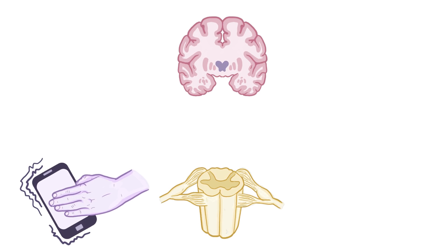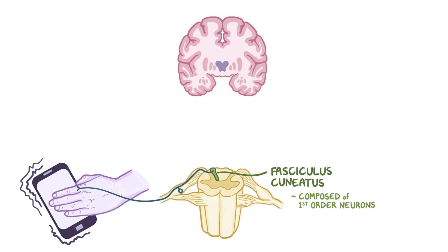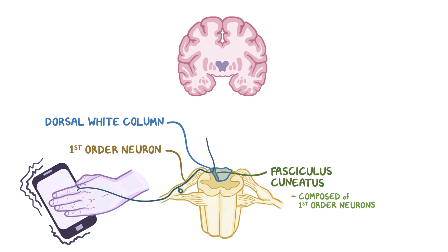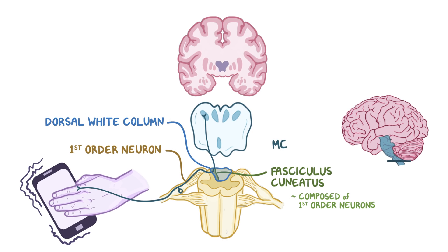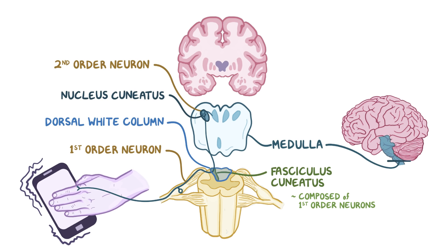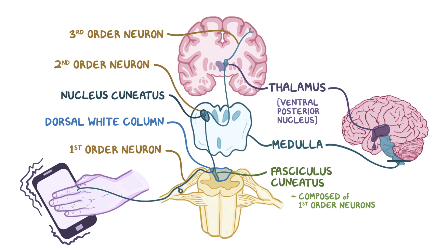Similarly, if you suddenly grab a vibrating cell phone, the sensation of vibration is carried from the nerves in the skin of your palm via the fasciculus cuneatus, which is a collection of nerves composed of first-order neurons. The fasciculus cuneatus is contained within the dorsal white column, located posteriorly in the white matter of the spinal cord. The first-order neuron ascends up along the same side of the whole length of the spinal cord to reach the lower level of the medulla oblongata, where it synapses with the cell body of a second-order neuron in the nucleus cuneatus. The second-order neuron then sends off an axon that crosses over to the opposite side of the medulla and travels up to the ventral posterior nucleus of the thalamus to synapse with a third-order neuron. The third-order neuron sends up an axon that carries the sensory signals to the primary somatosensory cortex, letting you know that your phone is vibrating.